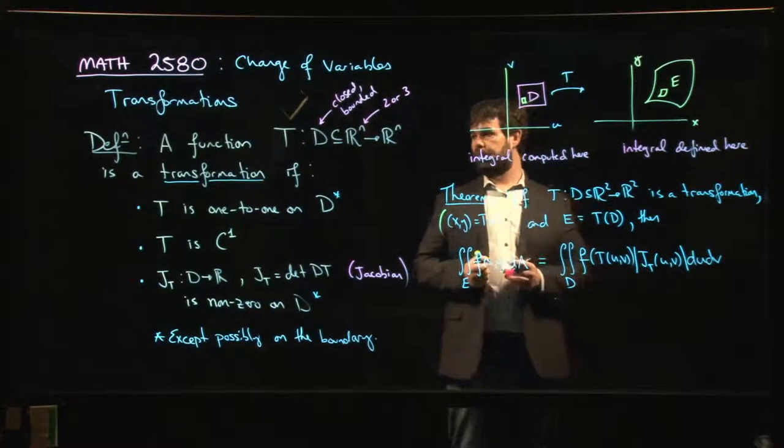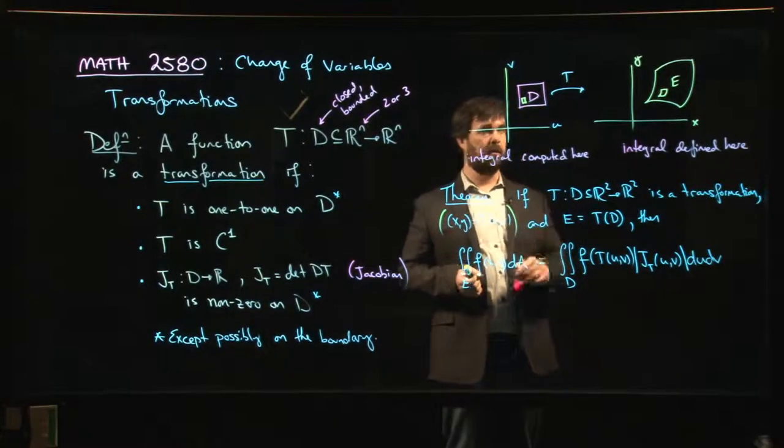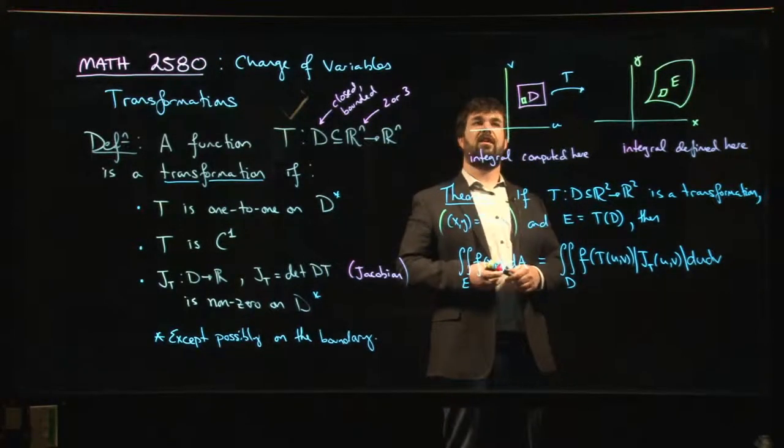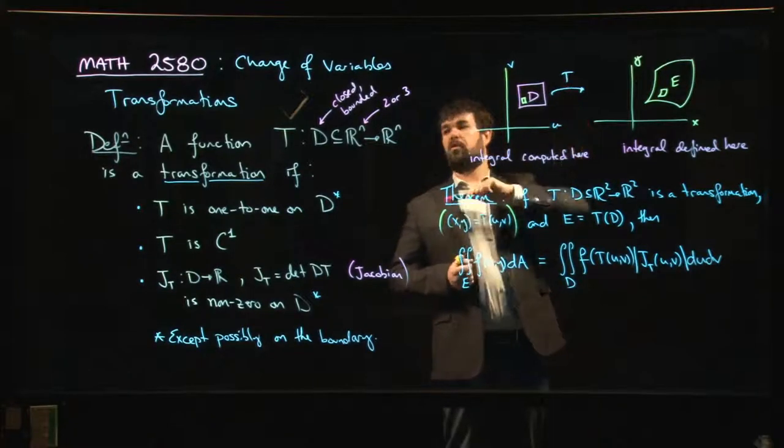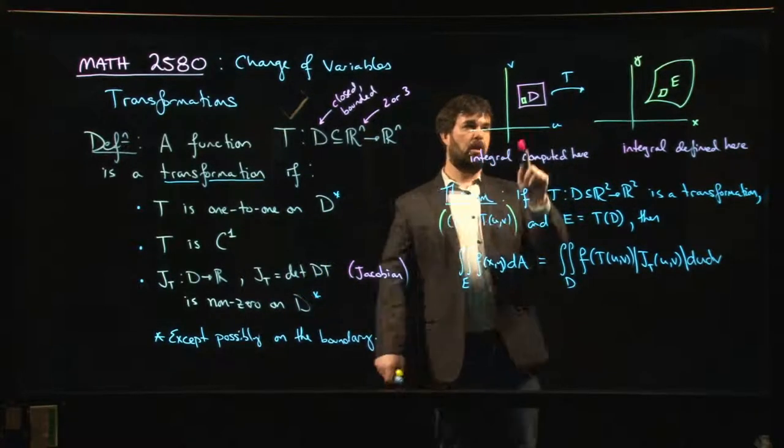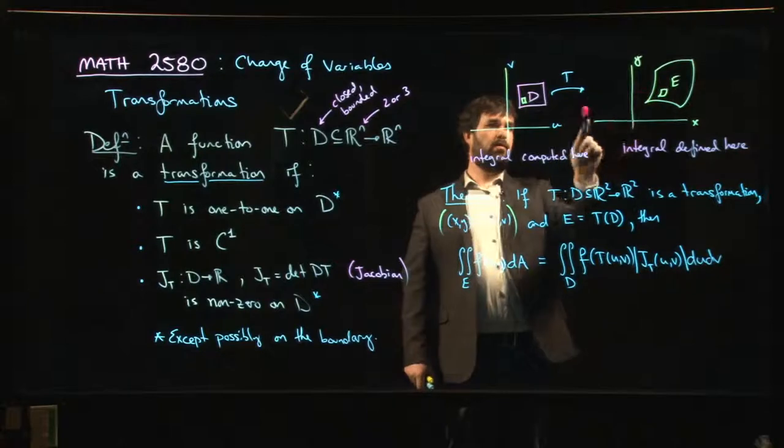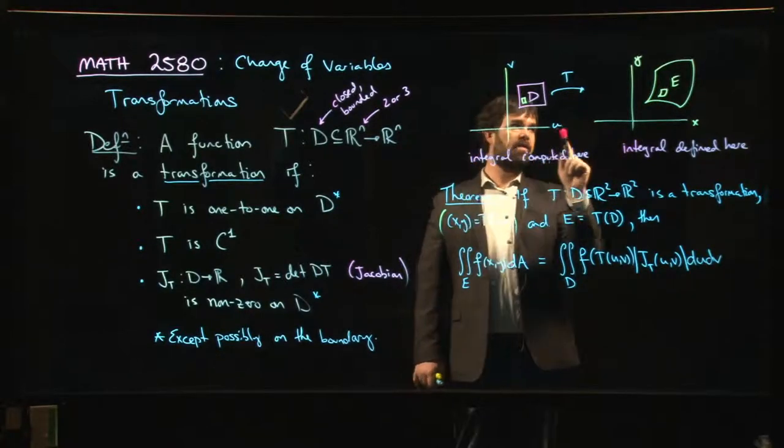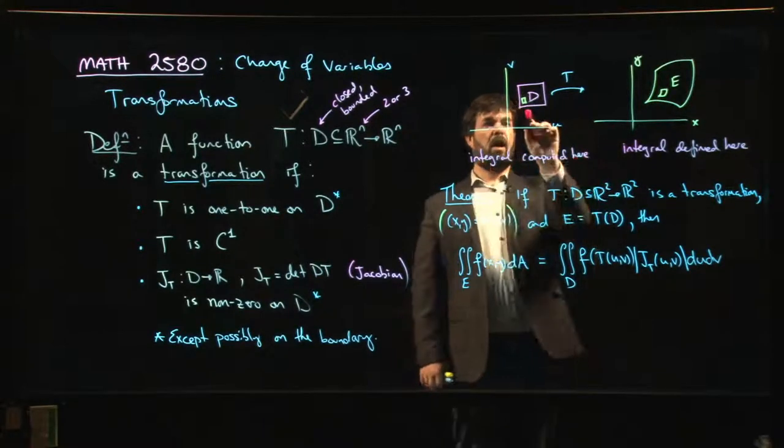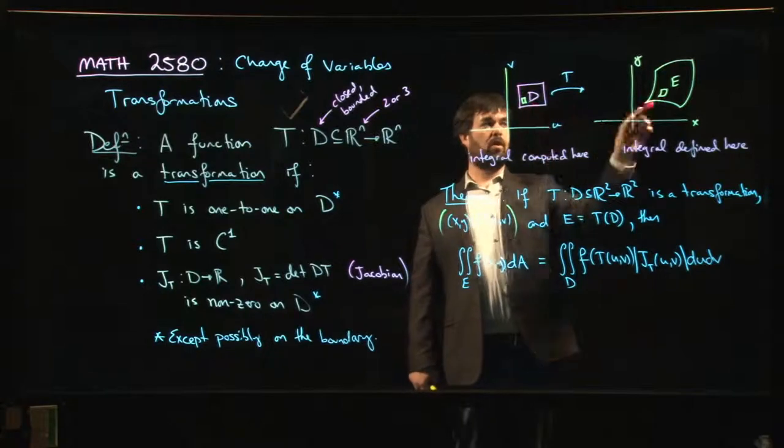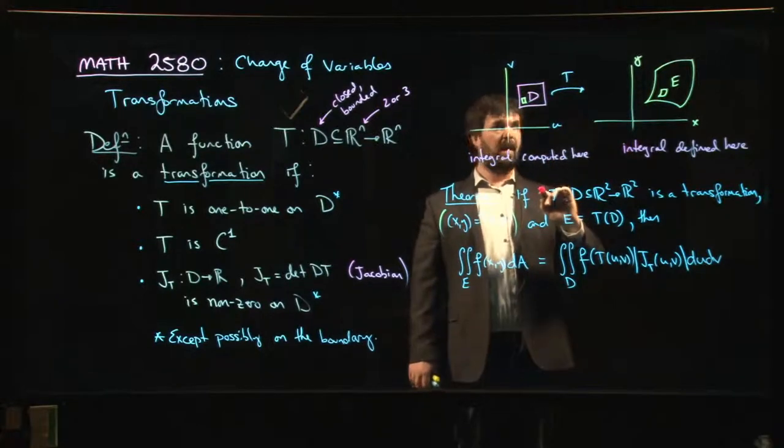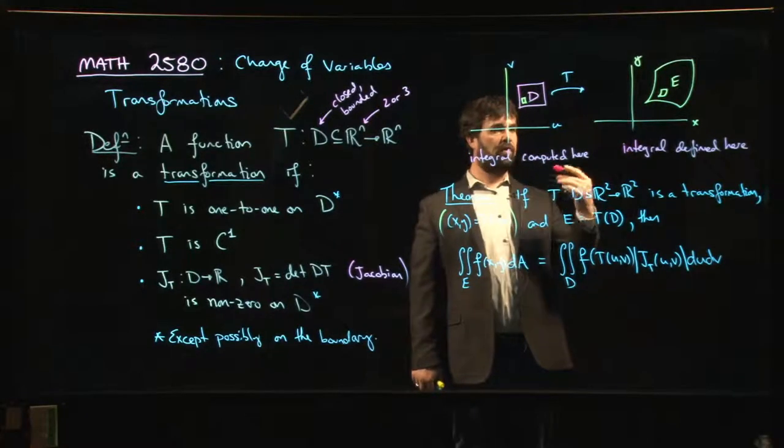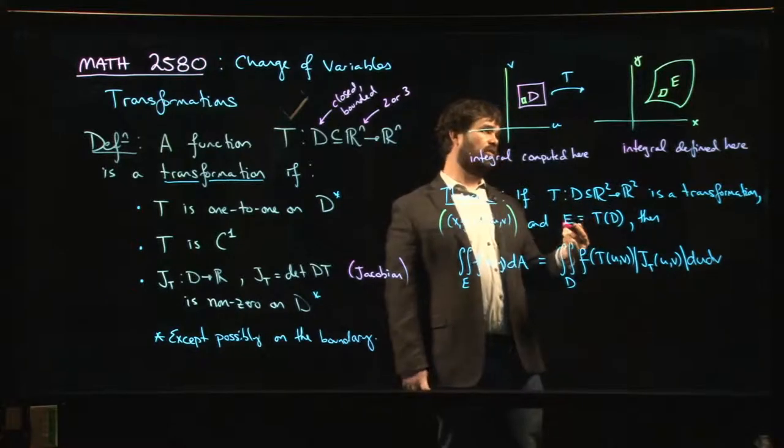Well, one of the things that you can prove, and the proof is in the textbook I put it in there, is that a transformation, if it satisfies these properties, it always takes boundary points to boundary points. And even more of the point, edges go to edges, corners go to corners. And so this gives you some clues often as how to define the transformation.